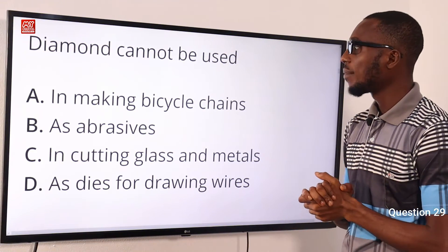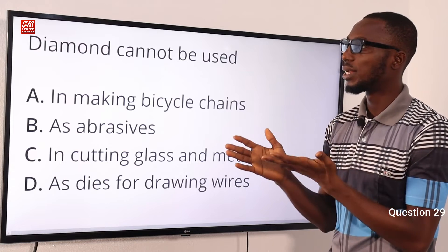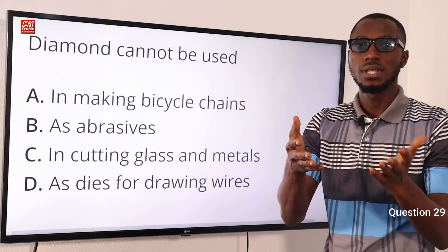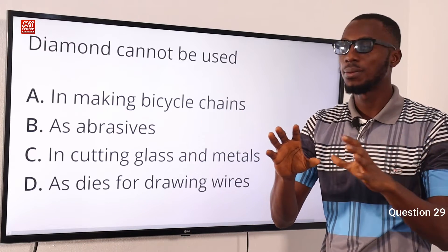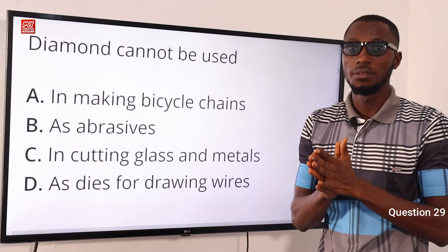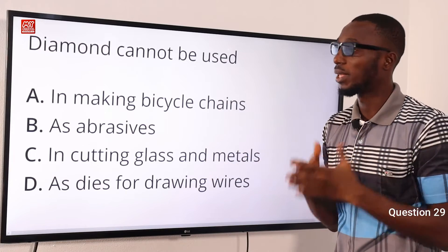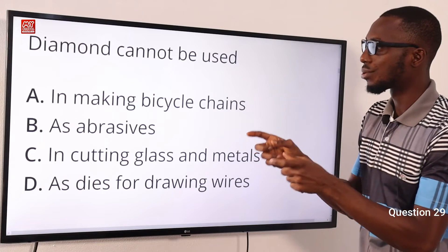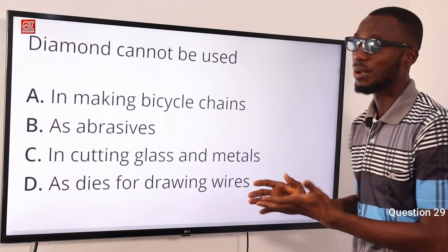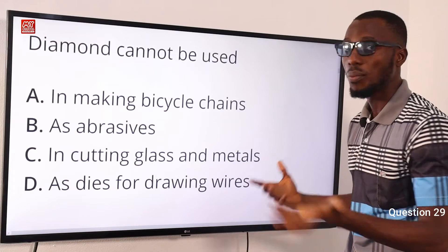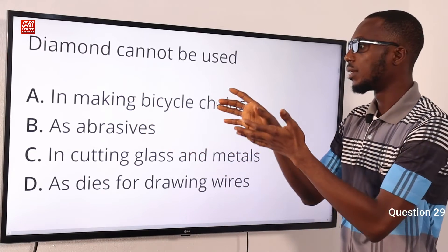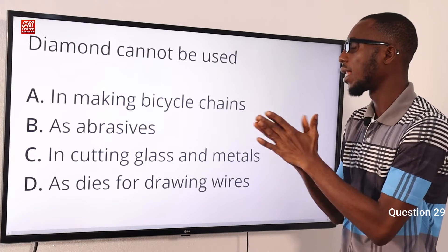Question 29. Diamond cannot be used to do what? We should have some background knowledge about allotropes. Talking about allotropes of carbon — the ability of one substance to exist in various forms in their physical state. Diamond and graphite are allotropes of crystalline carbon. Diamond is the purest form, it is octahedral in shape and the hardest substance known. Diamond can be used as an abrasive for sharpening tools, it can be used in cutting glass and metals, and it can be used as dies for drawing wires. It is not used in making bicycle chains — rather it is graphite that is used. So the correct option is option A: diamond cannot be used in making bicycle chains.